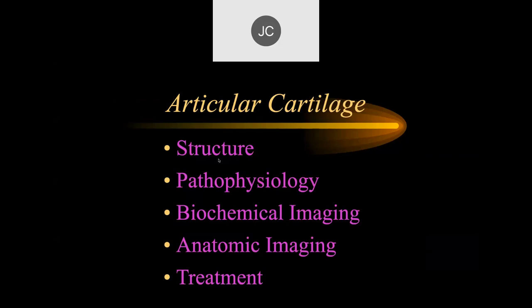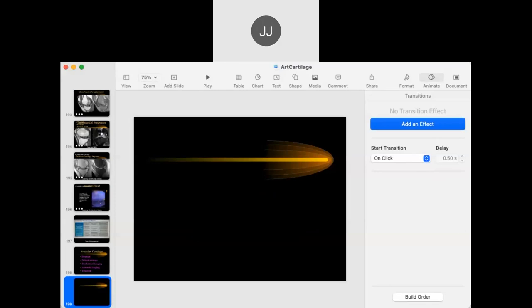To summarize articular cartilage: we've talked about structure, pathophysiology, biochemical imaging, anatomic imaging, and treatment. There are many different treatments, but what seems to be winning now are osteochondral grafts in many different forms. Most people are moving toward one-step techniques to avoid a second surgery. There's a lot of development in this area — it will be substantially better in five to ten years. The main problem is that you have to wait a long time to find out if it's going to work.